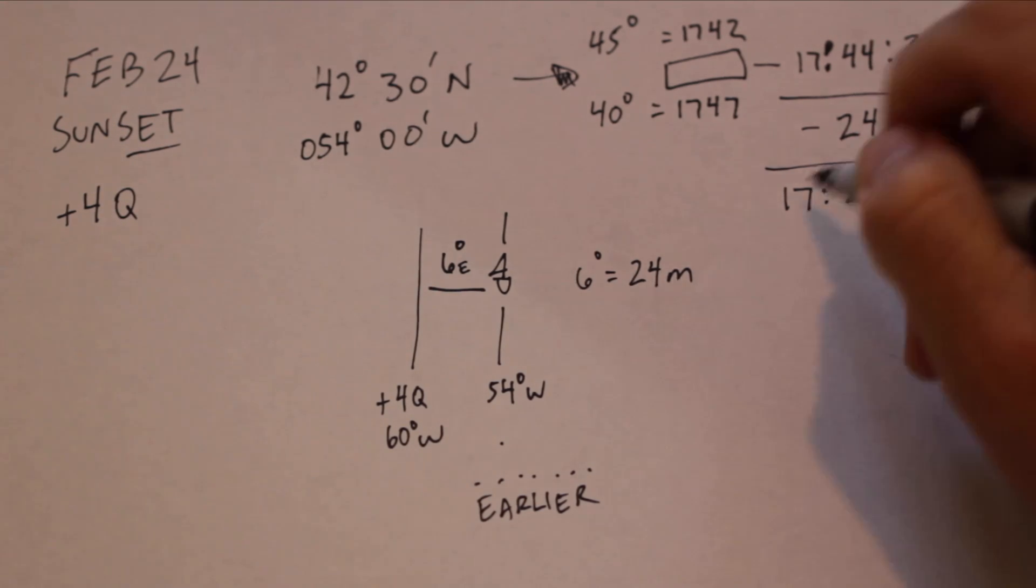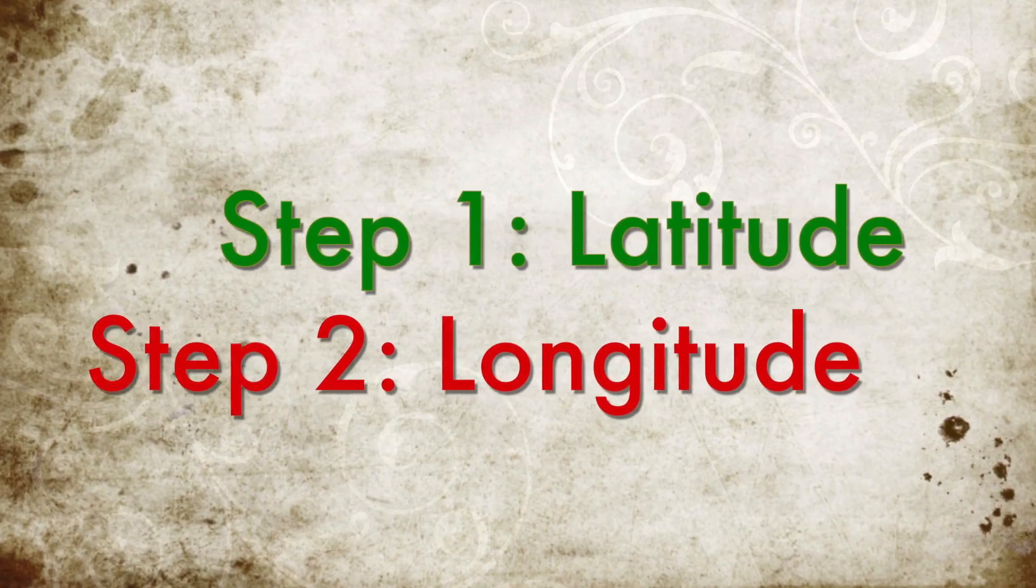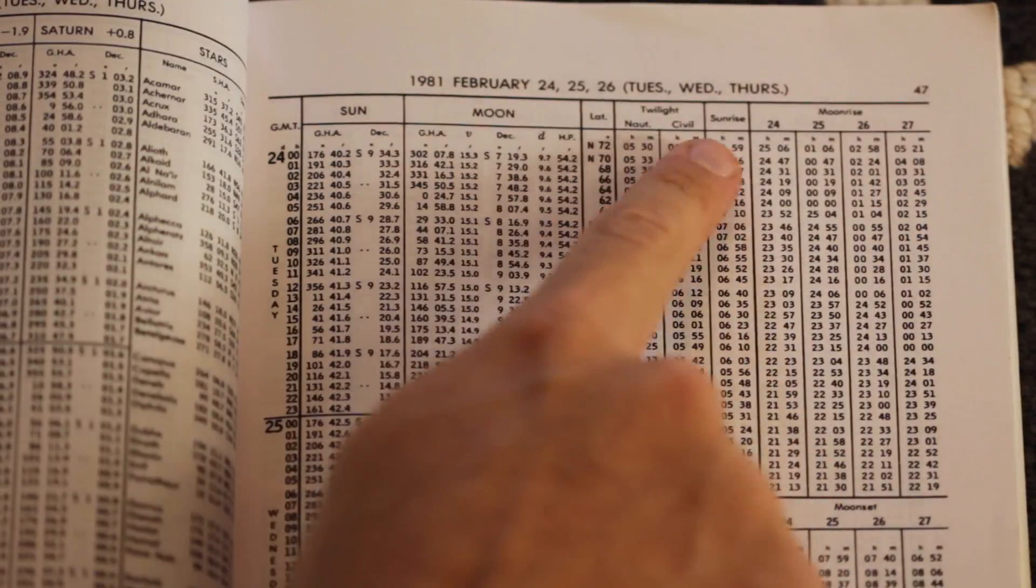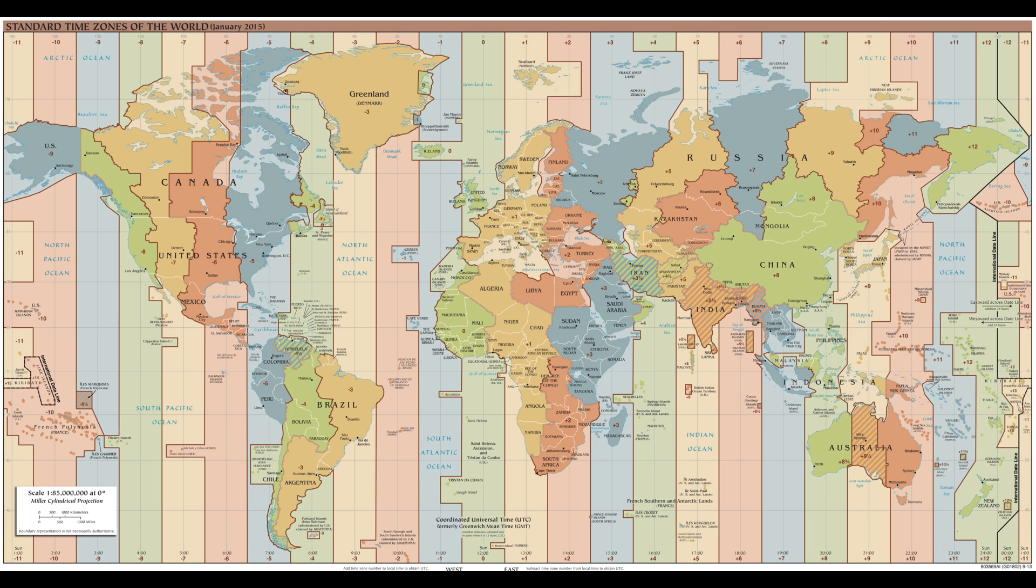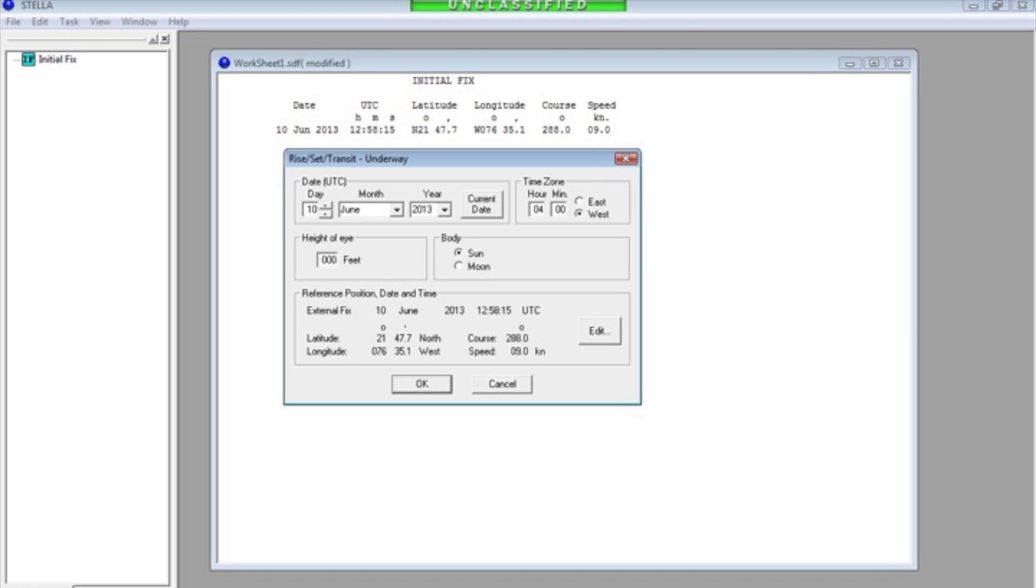That is the basic concept behind manual calculations for sunrise and sunset. Remember, correct for latitude first, then, based on the standard meridian you are observing, correct for longitude. Stellar calculations can be completed using the task menu dropdown and selecting rise, set, or transit.